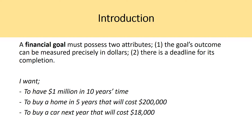A financial goal must possess two attributes. One, the goal's outcome can be measured precisely in dollars. And two, there is a deadline for its completion. So some financial goals would be: I want to have one million dollars in 10 years time — there's the dollar measure and the deadline. I want to buy a home in five years that will cost $200,000, or I want to buy a car next year that will cost $18,000.